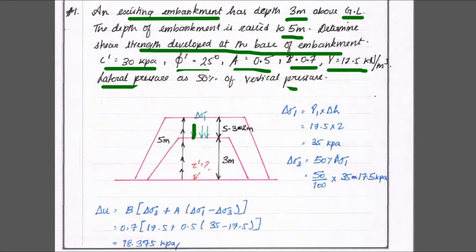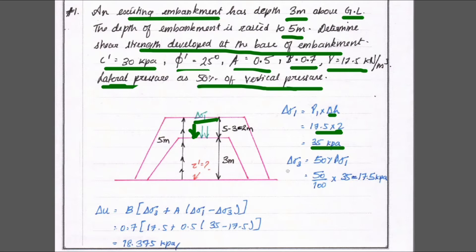Next, we calculate the vertical pressure Δσ₁ and the lateral pressure Δσ₃. Δσ₁ is the change in major principal stress, equal to γ × Δh = 17.5 × 2 = 35 kPa. The lateral earth pressure is 50% of vertical stress, so Δσ₃ = 50/100 × 35 = 17.5 kPa.